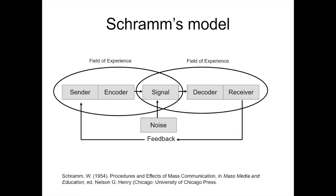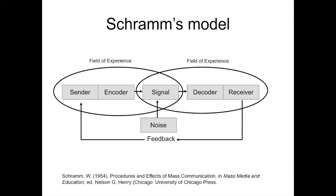SRAM's model is important to us in learning design and technology because by articulating the way communication happens, it helps us to control for certain things to make our learning environments better. For example, being able to anticipate what noise might impact a signal can help us — not necessarily to eliminate the noise, but perhaps to control for it in some way. Understanding that our examples have to have relevance to both parties means we do a careful analysis of who our learners are, so we have a better idea of what our instruction can do to bridge both fields of experience. I'm Marshall Jones, thanks for watching!